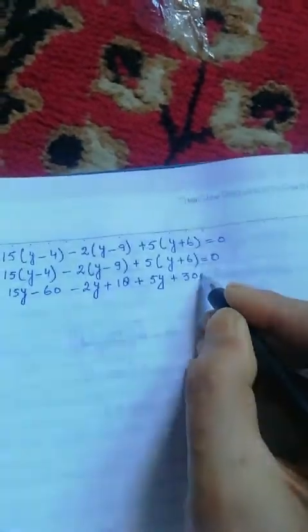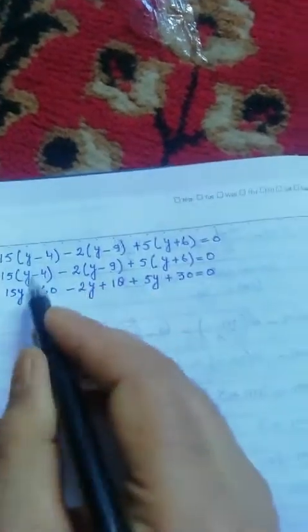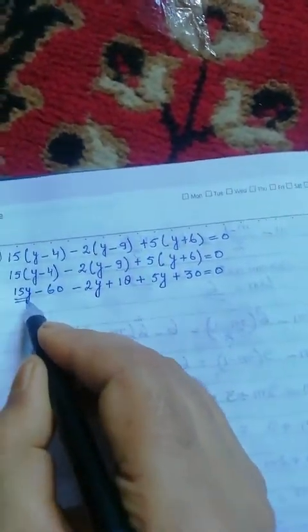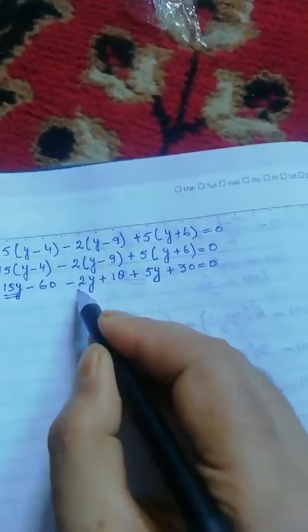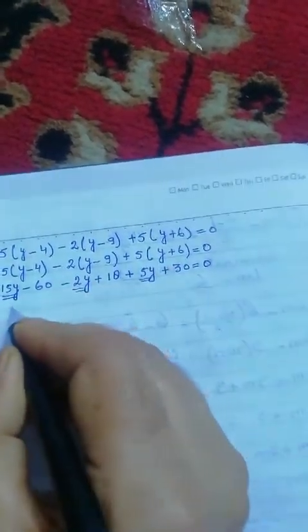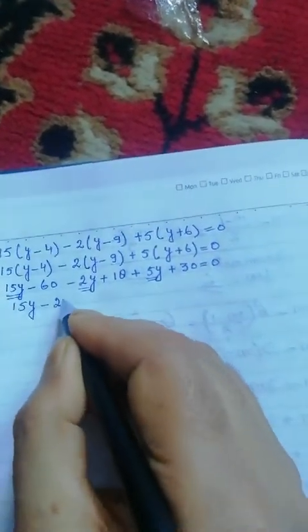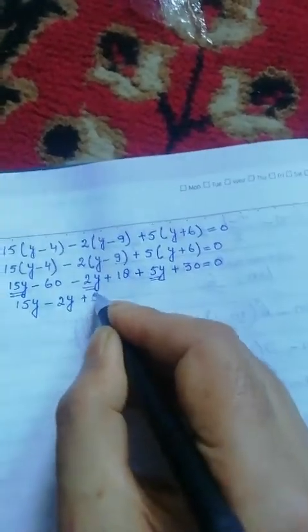Now combining the y terms: 15y minus 2y plus 5y, which is 18y.